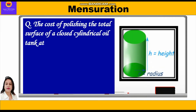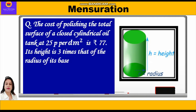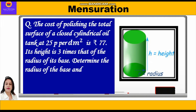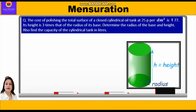The cost of polishing the total surface of a closed cylindrical oil tank at 25 paise per decimeter square is ₹77. Its height is three times that of the radius of its base. Determine the radius of the base and height, and also find the capacity of the cylindrical tank in liters.